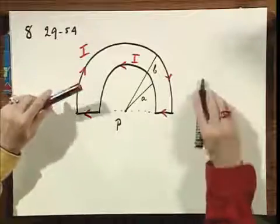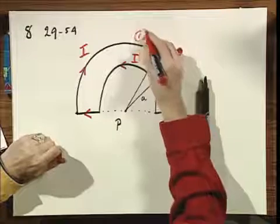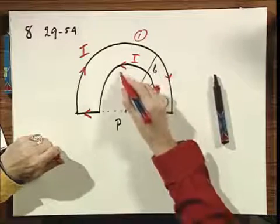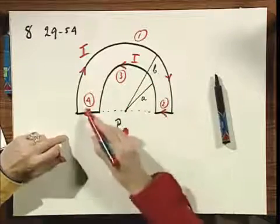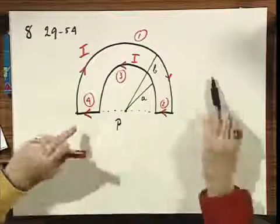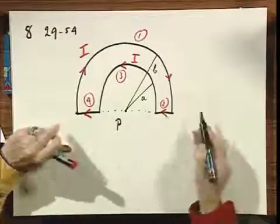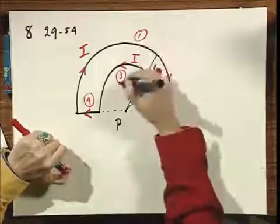Well, if we again give these lines numbers one, two, three, four, then it's immediately obvious that two and four do not contribute to the magnetic field at B because the sine of theta equals zero in this cross product. So we only deal with three and with one.